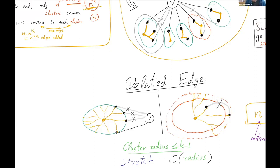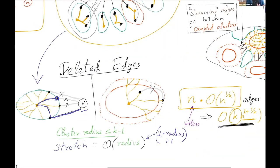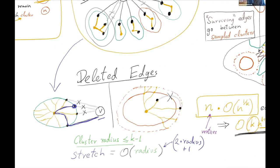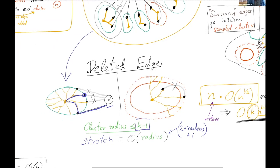The other reason we run for k iterations concerns the deleted edges. We've already seen one kind: if vertex V is connected to the same green cluster with multiple edges — say 4 — we keep only one. For a deleted edge from V, we replace it with a path using edges within the cluster plus the one kept edge between V and the green cluster, resulting in a stretch of 2 times the radius plus 1. There's also a second kind: edges between vertices within the same sampled (red) cluster can be safely deleted and replaced by a similar path through the cluster, giving the same stretch result for any path in the graph.